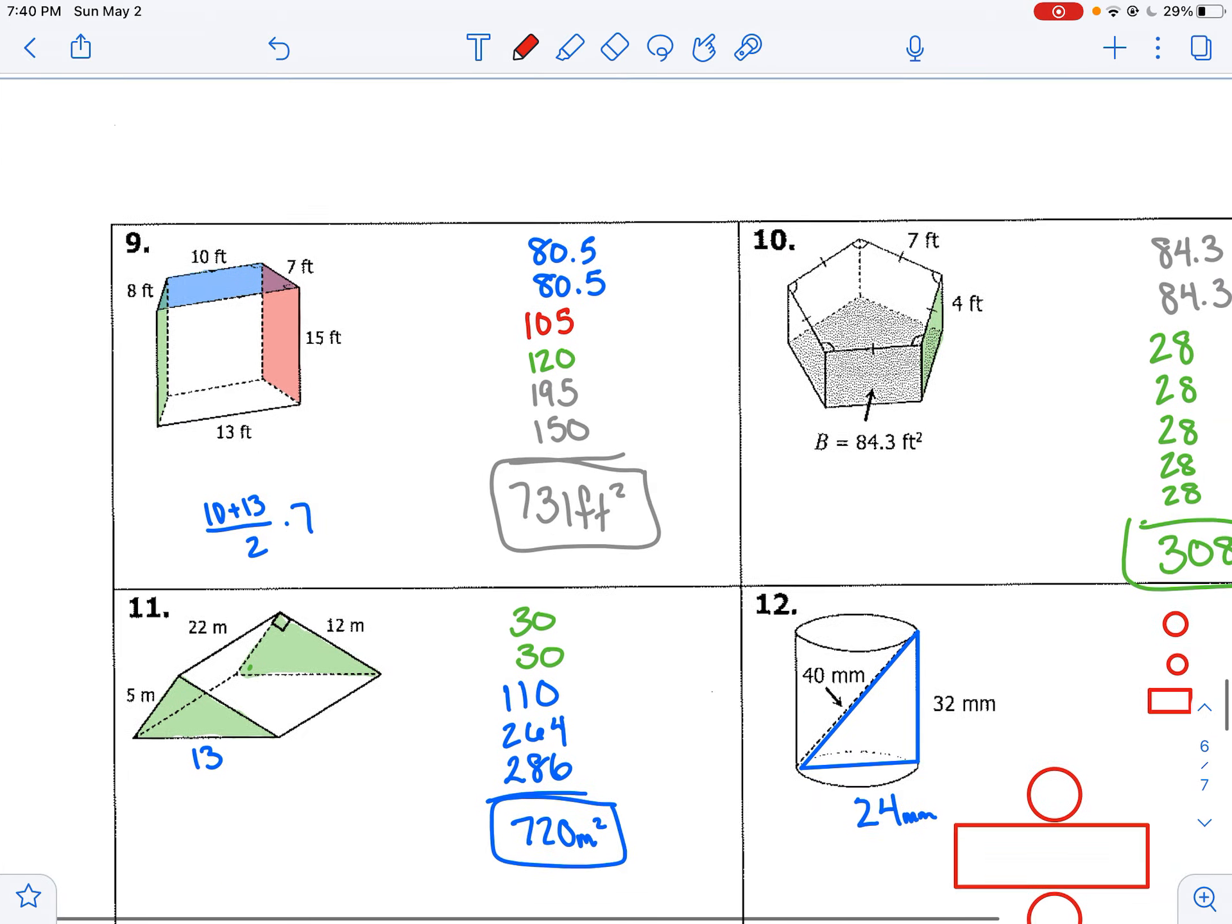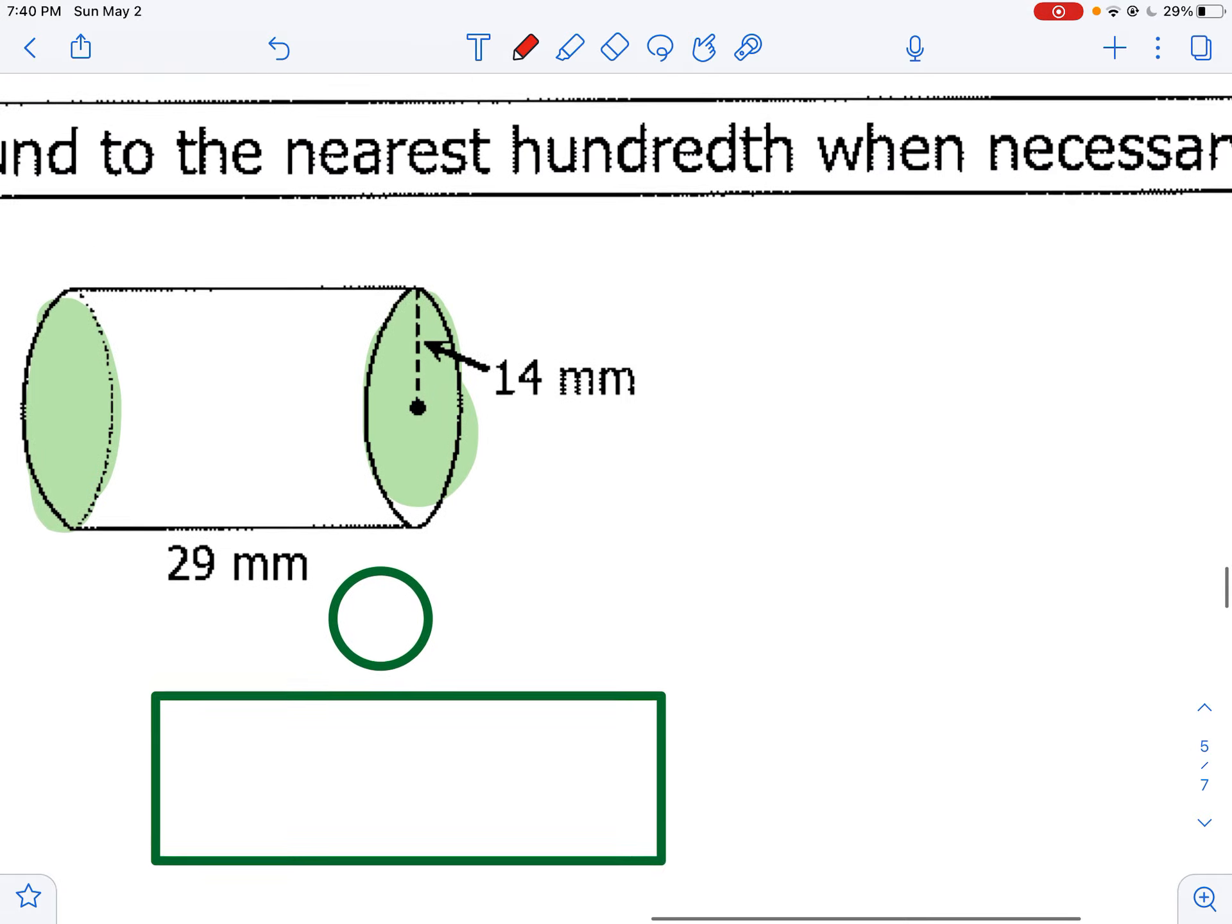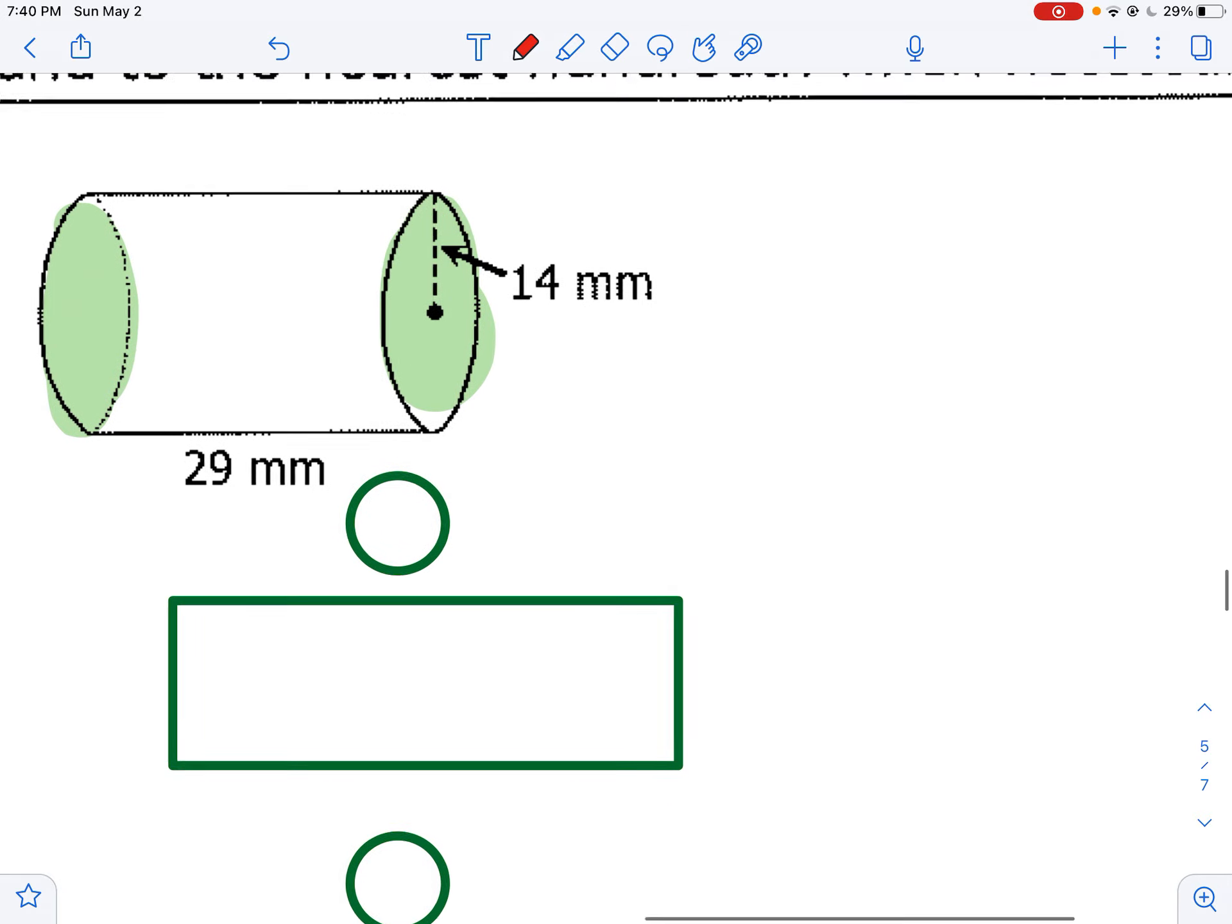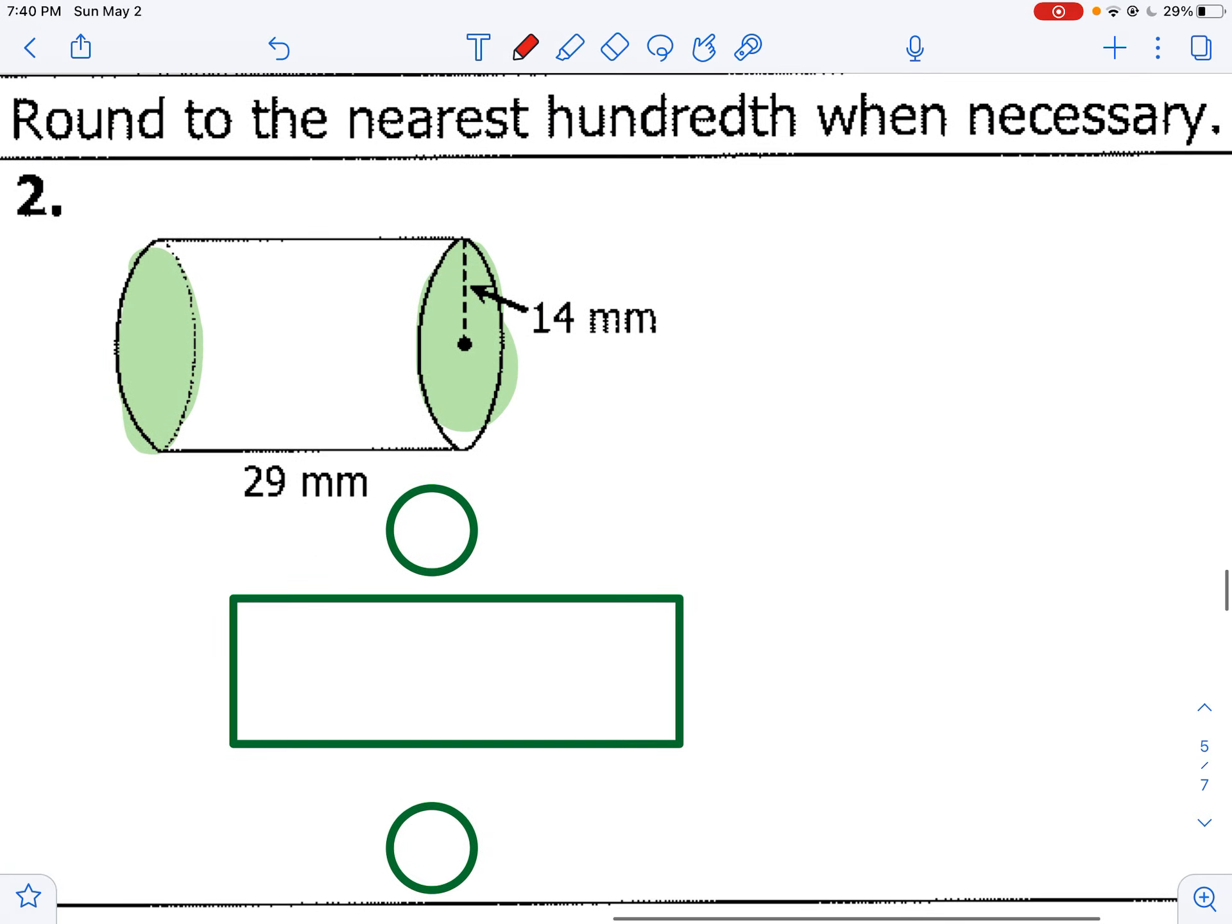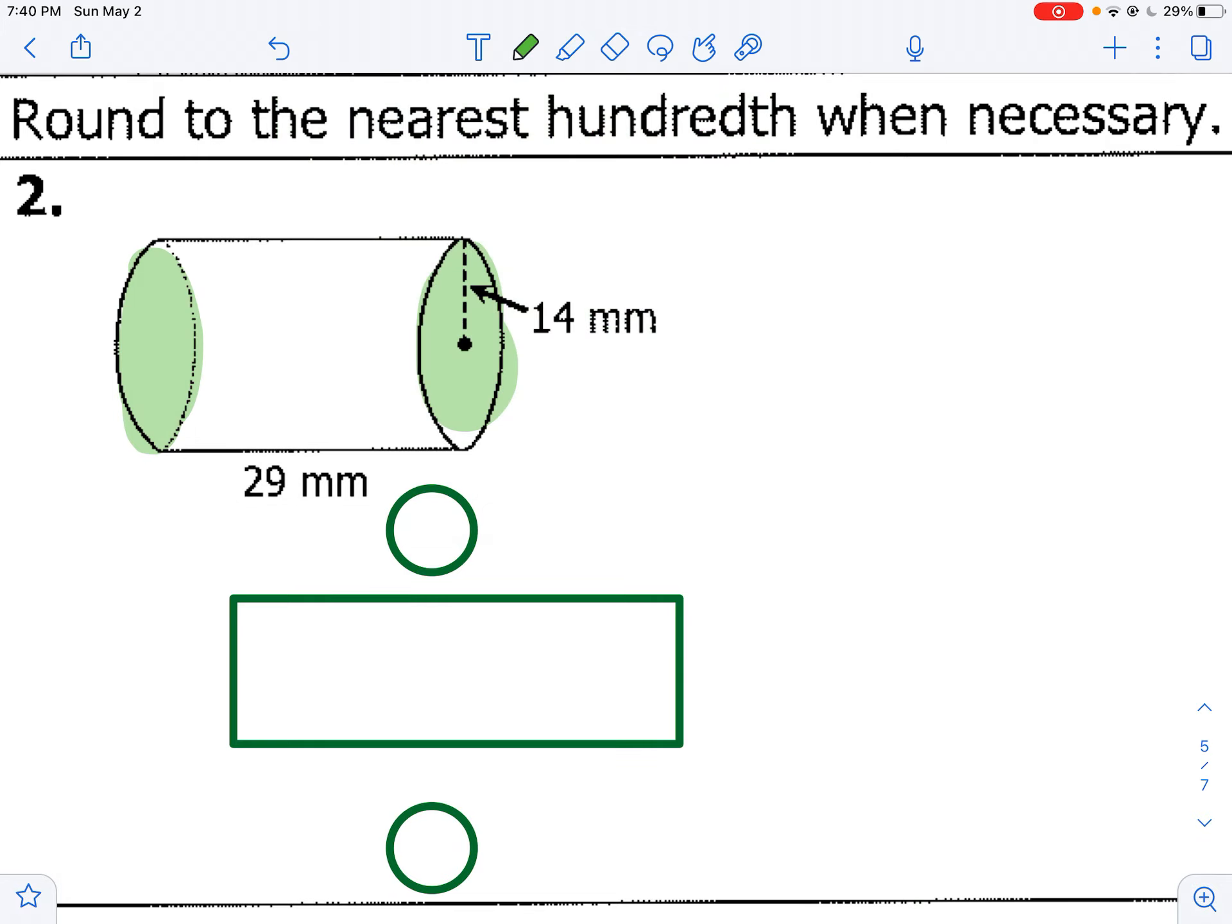All right, let's do two more. Here's another good one. So again, here's our radius is 14. So the top part would be pi times 14 squared, or 196 pi. Same for the bottom, because they're both circles.